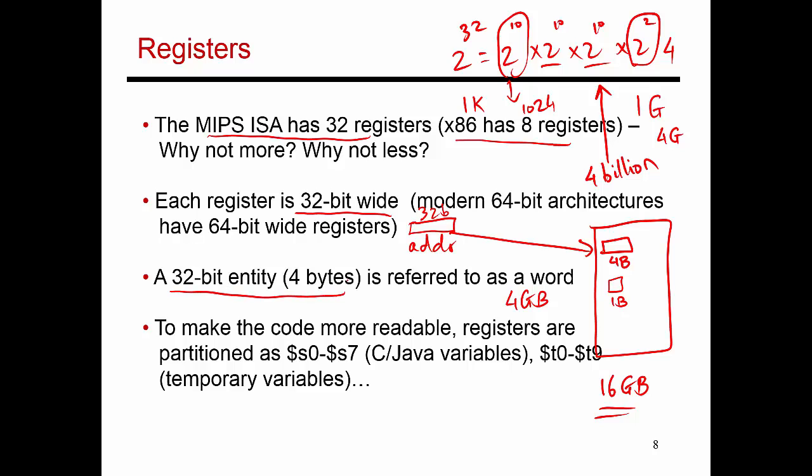A 32-bit entity such as this is referred to as a word. These 32 registers are also given special names, and this is only to make the code more readable for a human. Each register is given a specific name. If I use S0 through S7, those usually refer to registers that correspond to a C or Java or high-level programming language variable. If I'm using a register T0 through T9, that refers to a value that's a temporary scratchpad number that does not correspond to any variable in memory. As we go through examples, you'll see when I use S0, S1, and when I use T0, T1.